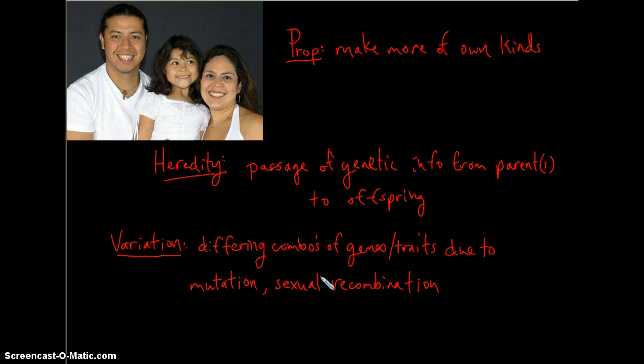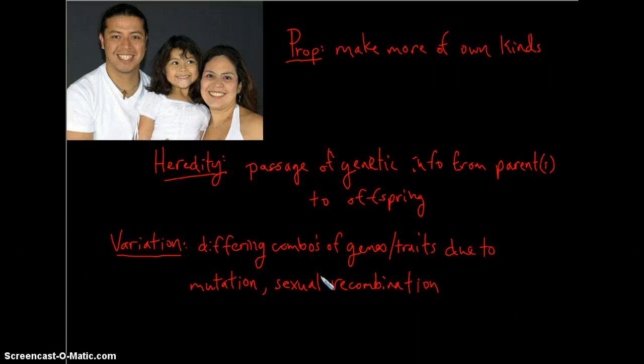This chapter looks at how hereditary units called genes or chromosomes get passed from parent to offspring. Specifically, we're going to look at how chromosomes are packaged during meiosis to ensure a diploid number of chromosomes are maintained between the generations, as well as having the positive impact of increasing variation in a population, which is ultimately one of the most important factors in the evolution and long-term survival of a population.